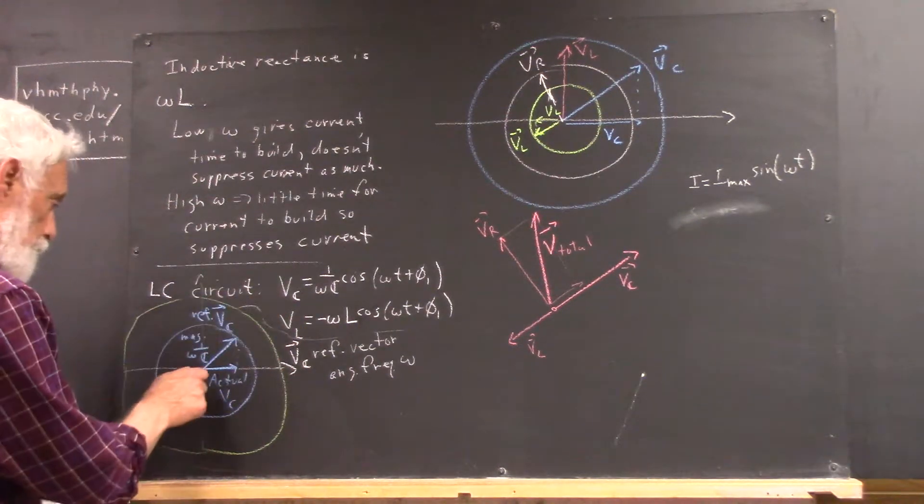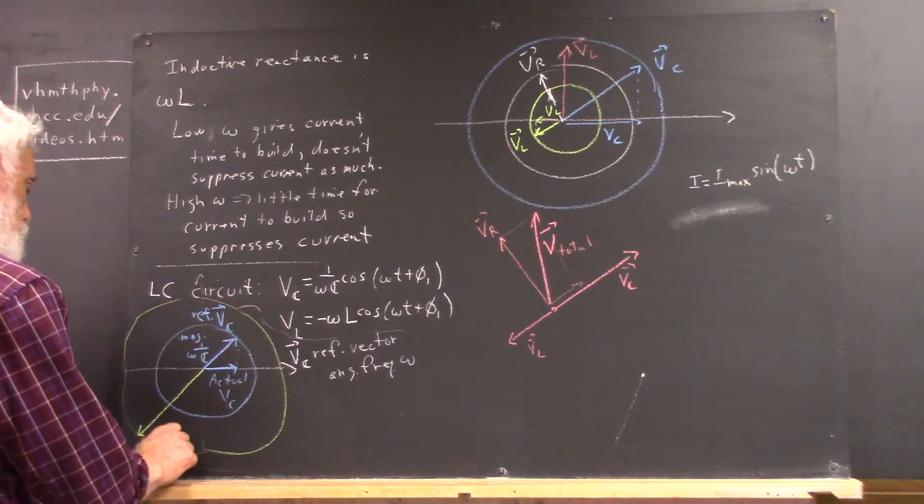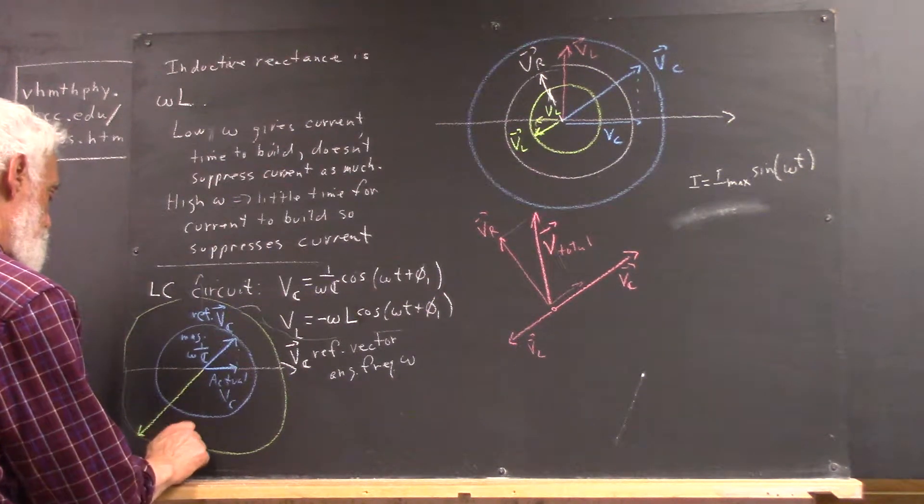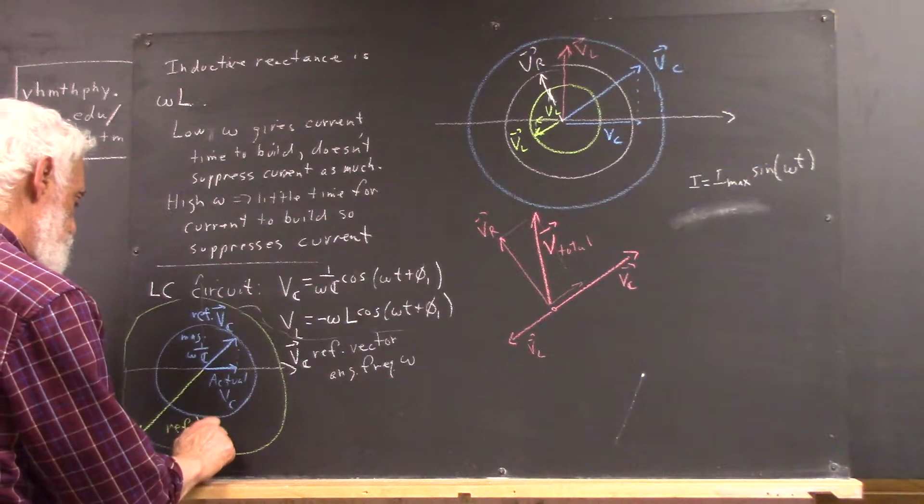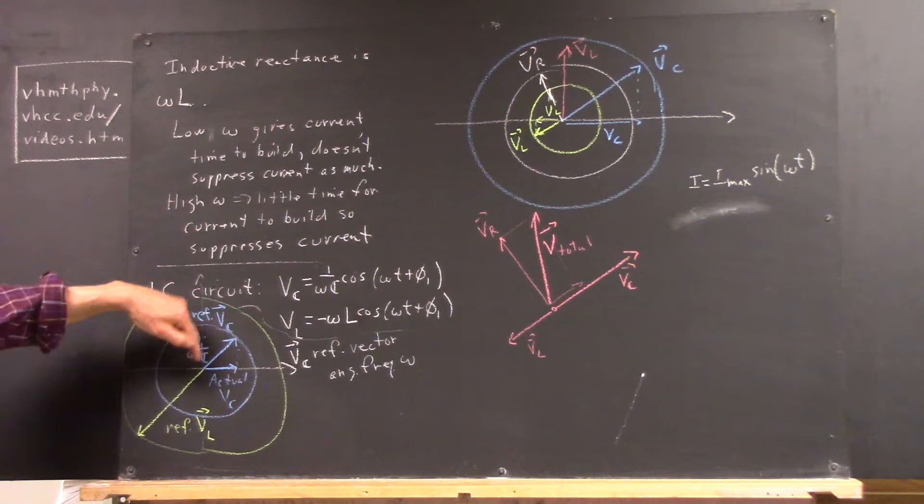the inductor voltage, we have a reference vector V sub L. Now, I drew that in the opposite direction from VC.